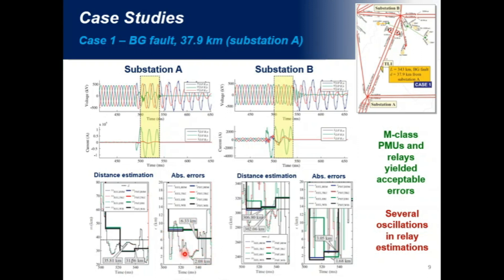However, analyzing the substation B here, we could see that signals have presented a lot of oscillations during the fault location. So, we considered in this paper the average value during that period. And regarding the errors, we could see that both relay and PMU fault locations were presented an accuracy within the accepted margin of about three and two kilometers, approximately. So, the good thing is that M-class PMUs has shown to be capable of estimating fault distance. They yielded acceptable errors, but several oscillations were verified in relay estimations.